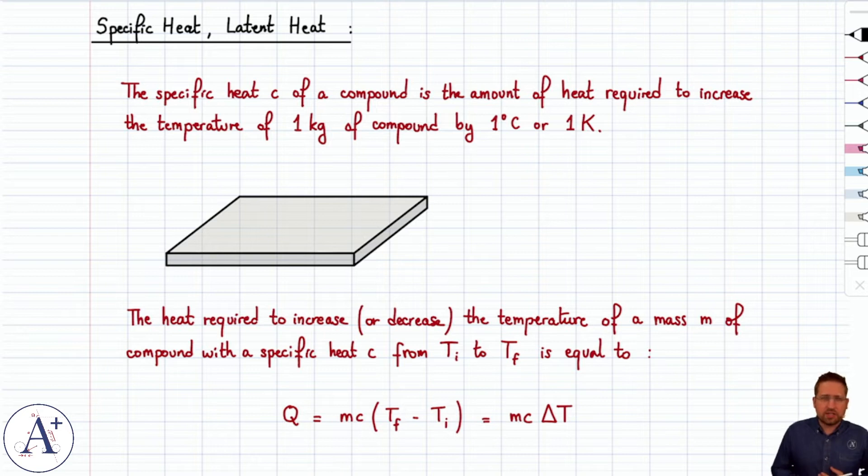So let's start with specific heat. Specific heat, C, of a compound is the amount of heat required to increase one kilogram of compound by one degree Celsius, or one degree Kelvin, because an increase in one degree Celsius is the same as an increase in one degree Kelvin. And so specific heat is specific to the compound.